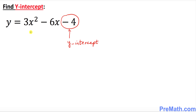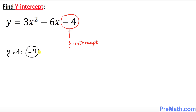In this step we are going to find the y-intercept. The easiest way to find the y-intercept is to look for the constant term — the last number. That is always your y-intercept. In our case, the y-intercept is simply negative 4. That's all you have to do.